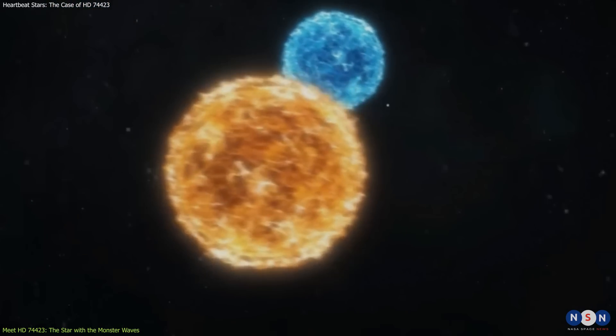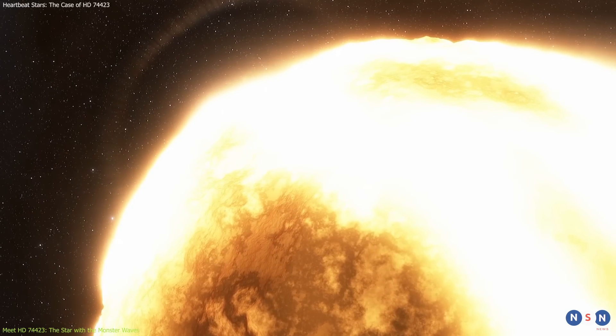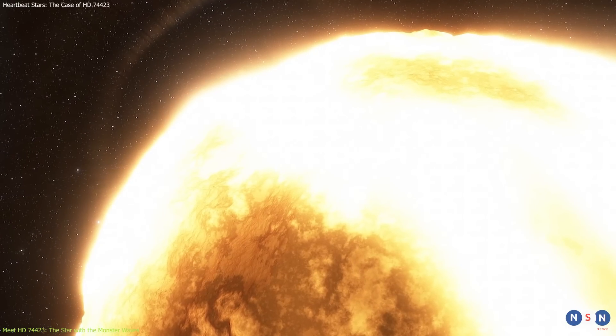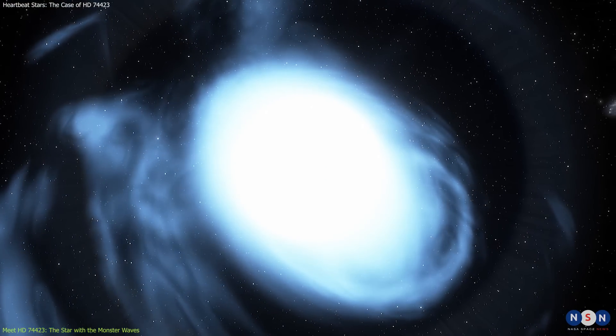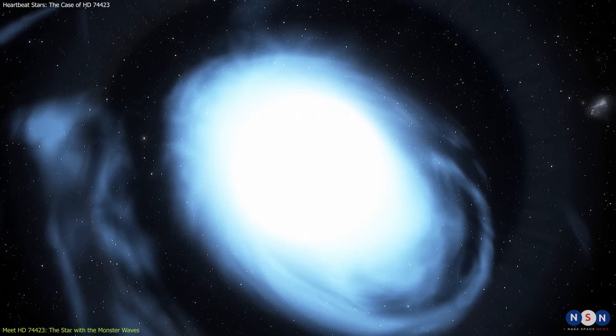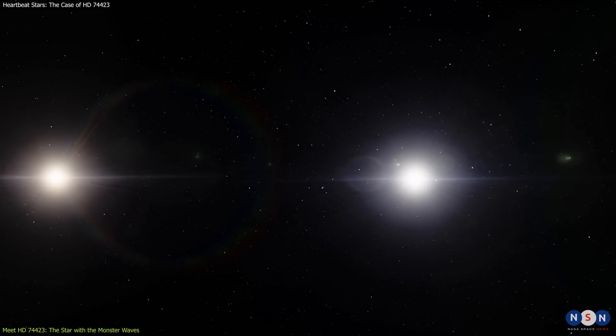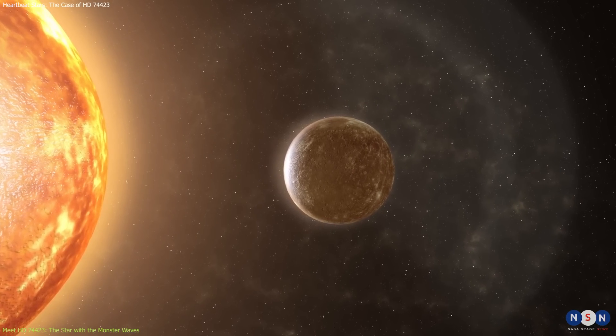It consists of two stars. One is about 1.7 times the mass of the Sun, and has a surface temperature of about 7900 Kelvin. The other is about 2 times the mass of the Sun, and has a surface temperature of about 7600 Kelvin. They orbit each other every 1.6 days at an average distance of only 8 million kilometers, which is about 20 times closer than Mercury is to the Sun.